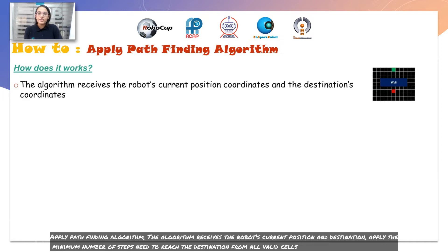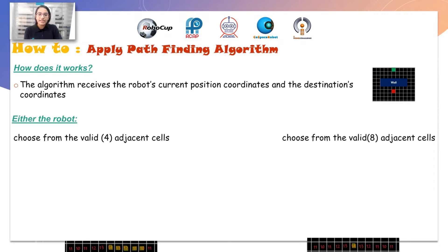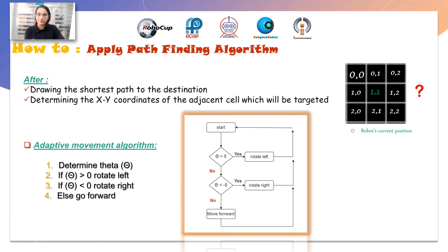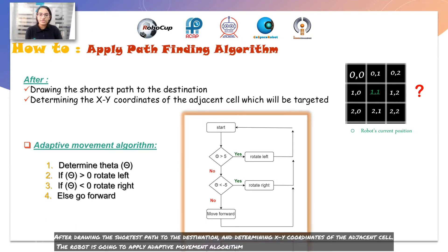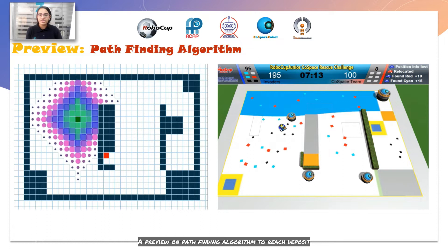Apply pathfinding algorithm, where the algorithm receives the robot's current position and destination. We apply the minimum number of steps needed to reach the destination from all valid cells. In our first implementation we used to move in four adjacent cells, but we now apply moving diagonally, which saves some steps. After drawing the shortest path to the destination and determining the x-y coordinates of the adjacent cell, the robot applies an adaptive movement algorithm.